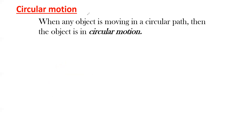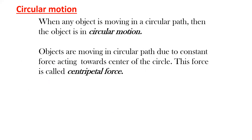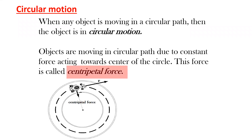When an object is moving in a circular path, we call that circular motion. Objects move in a circular path due to a constant force directed towards the center, and this force has a specific name — we call it centripetal force. Centripetal force is the name given to the force acting towards the center. For example, a Formula One racing car moving in a circular track — the force is always towards the center.